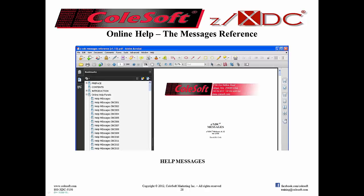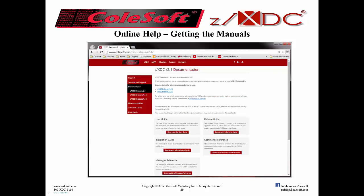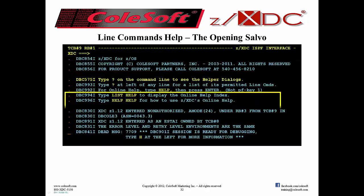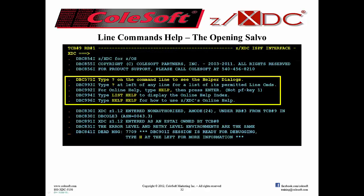If you've looked up a message and still don't know what's going on, let me know — if the doc needs improvement, I will improve it. All of ZXDC's manuals can be downloaded from our website, www.colsoft.com. Now, back to the opening salvo: we've just finished talking about online help and ZXDC manuals. Now let's cover getting help for line commands.